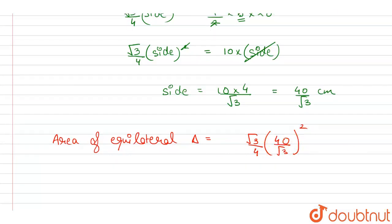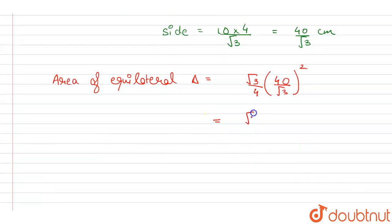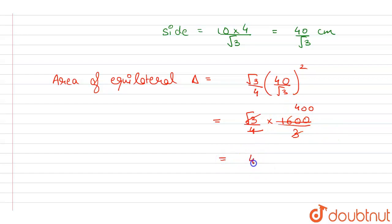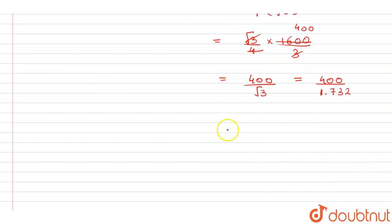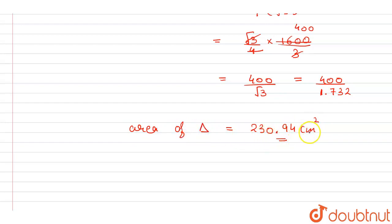Simplifying, root 3 divided by root 3 leaves root 3 in the denominator, and 1600 divided by 4 gives 400. So the area comes out to be 400 divided by root 3. Using root 3 equals 1.732, this gives an area of 230.94 centimeter square. So the area of the equilateral triangle is 230.94 cm².